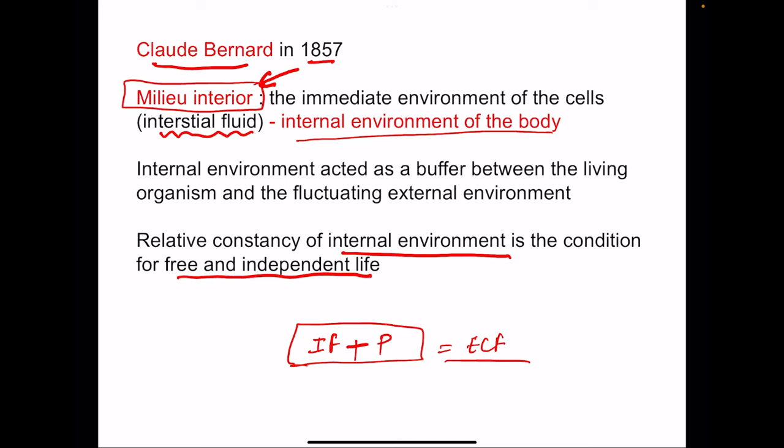The job of the entire body is to maintain relative constancy of the internal environment for a free and independent life. Note the term relative constancy — it is not fully constant at one value; it keeps changing within a range compatible with life. Certain conditions require exaggerated actions of various systems — for example, during exercise, there is increased requirement of nutrients and oxygen and increased waste products in muscles, so blood flow to tissue must increase.